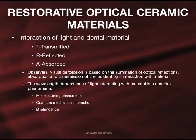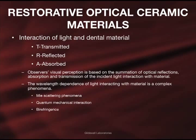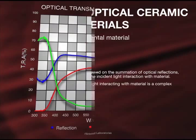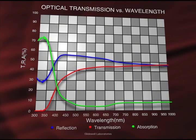When light interacts with dielectric materials, the light is transmitted, reflected, or absorbed. The amount of light transmitting through dental ceramic material is dependent on porosity, or Mie scattering, composition, or quantum mechanical effects, and crystal size and structure, or birefringence. A typical spectrophotometer graph of Bruxer zirconia ceramic material shows transmission, reflection, and absorption.